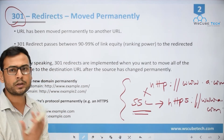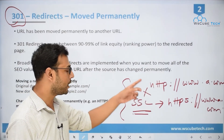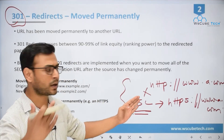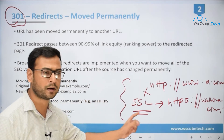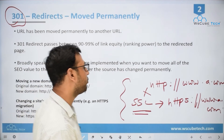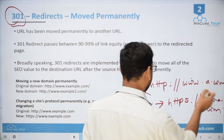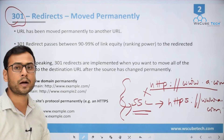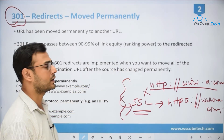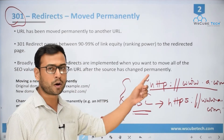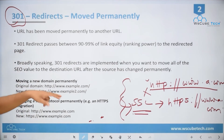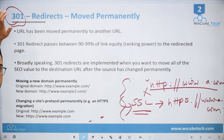Temporary redirection is when you are redirecting users and crawlers to a different URL for a specific time period — it's a temporary thing, not permanent. In the HTTP to HTTPS example, you are permanently redirecting users and crawlers from the old URL to the new one. You will never want users or crawlers to return to the old URL — so it is a permanent shift, and you use 301 redirection.